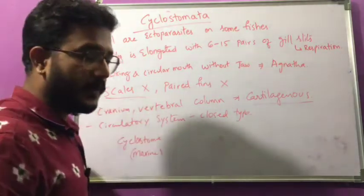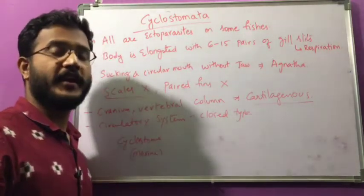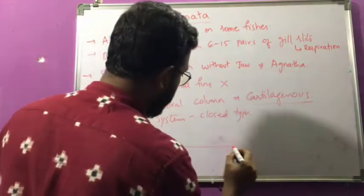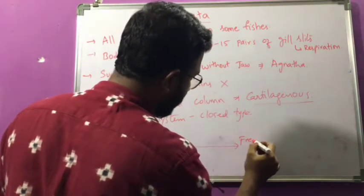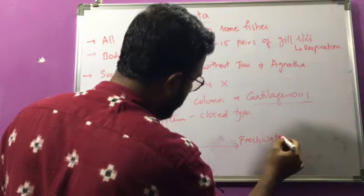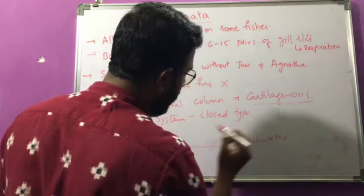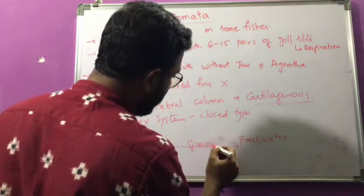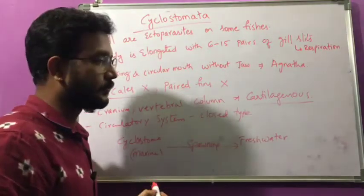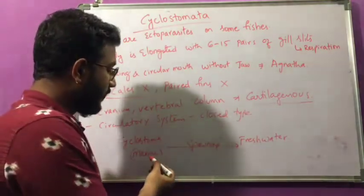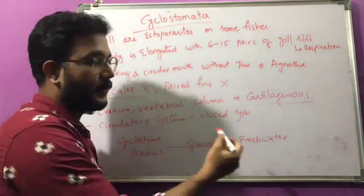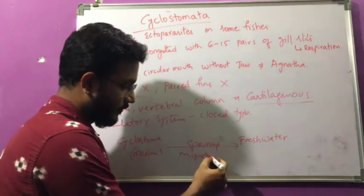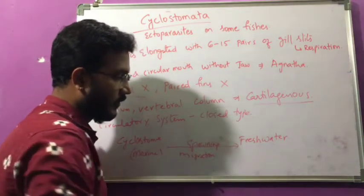But for breeding purposes — for laying eggs — they will come to fresh water. This process of laying eggs is known as spawning, and the movement from marine to fresh water is called migration.